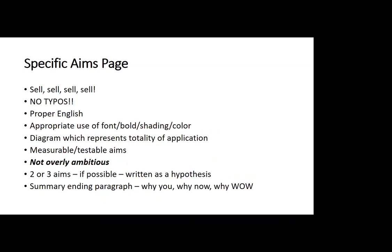Two or three specific aims is perfectly fine for a training grant; four looks pretty overly ambitious. At the end of the specific aims page, say why you, why now, and why wow — why is this the most important thing ever to be done right now and by you? Leave me with that little teaser, and I'll be excited. If I'm totally sold on your specific aims page, I might give you a phenomenal score and move on, having already become your champion. That's why this page is so incredibly important.